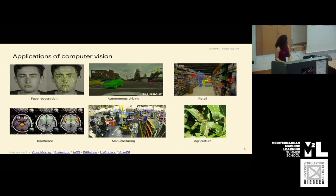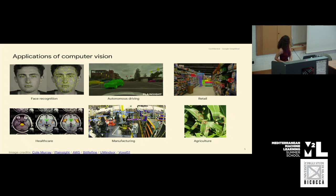It is also used in retail. For example, there are the Amazon Go stores, which are cashierless — customers go in, pick up the stuff they'd like to have, and then just leave the store. How it works is that the items the customers are picking up are tracked with computer vision algorithms. Another area is healthcare. Here there is an MRI scan with some segmented areas of the brain.